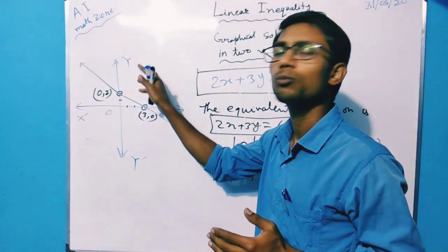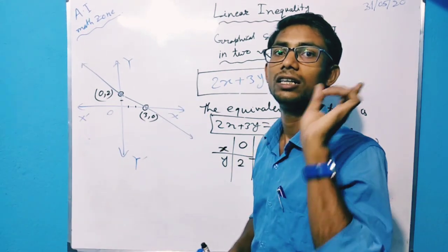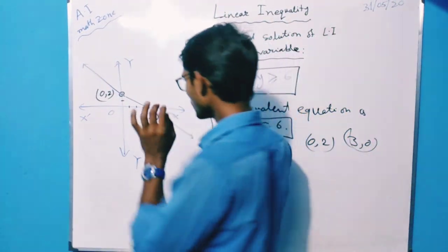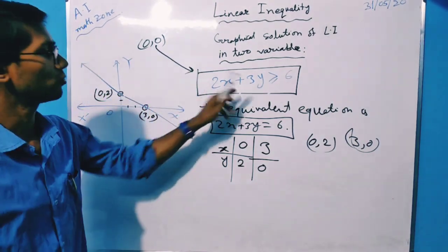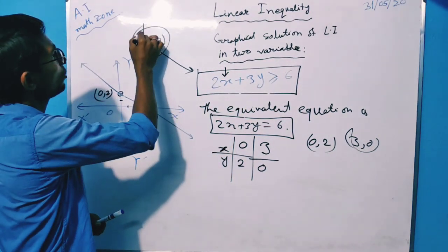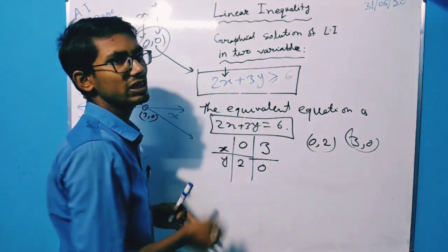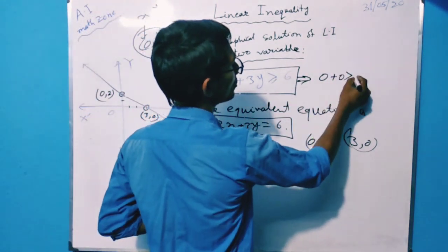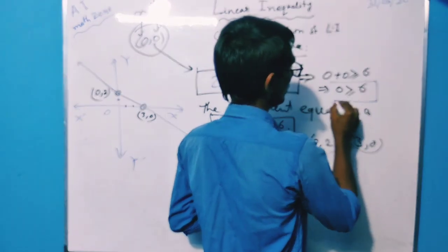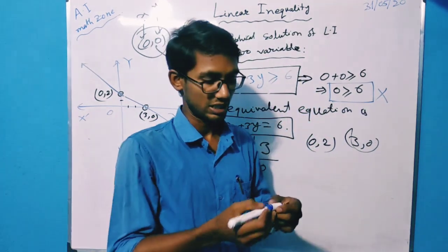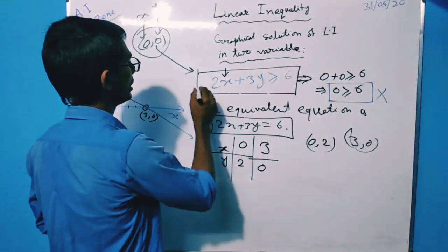The most simple point to test is (0, 0). Just try to satisfy this inequality with that point. If we put x equals 0 and y equals 0, then this side will be 0. That means 0 plus 0 is greater than or equals to 6, which implies 0 is greater than or equals to 6. This statement is incorrect. That means the point (0, 0) is not satisfying the given linear inequality.